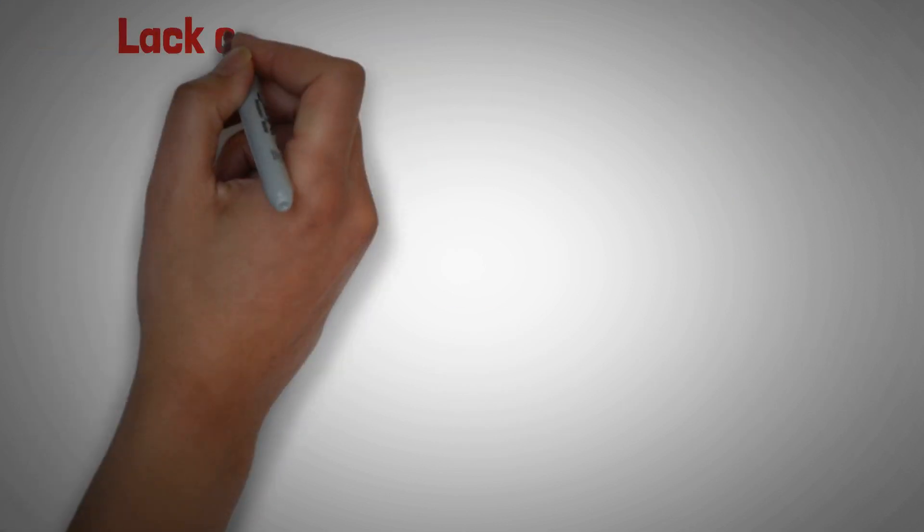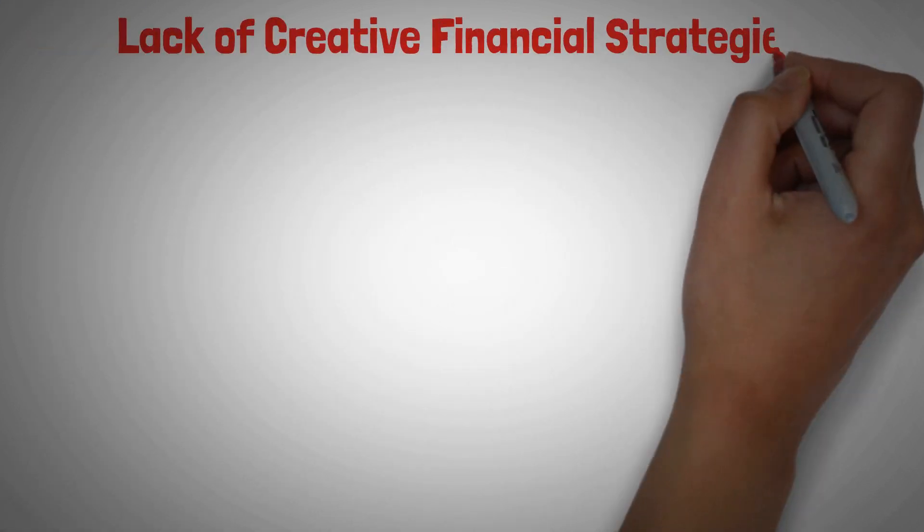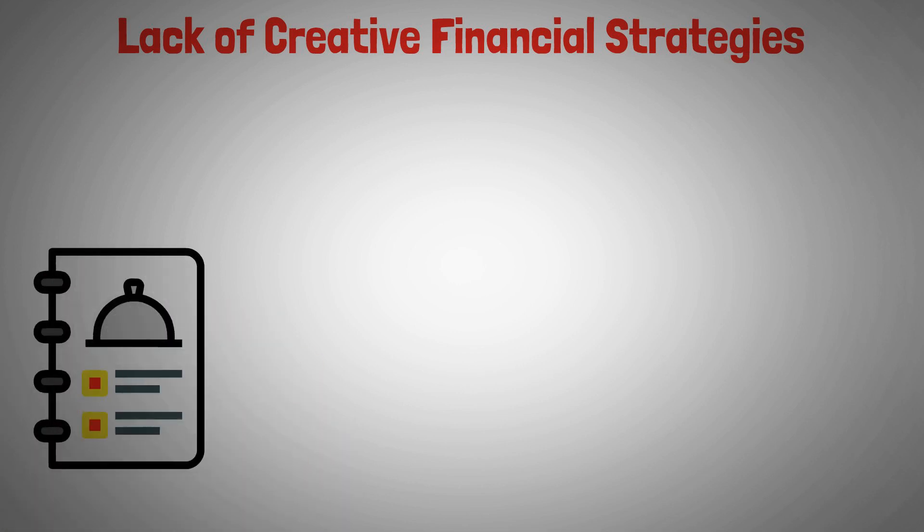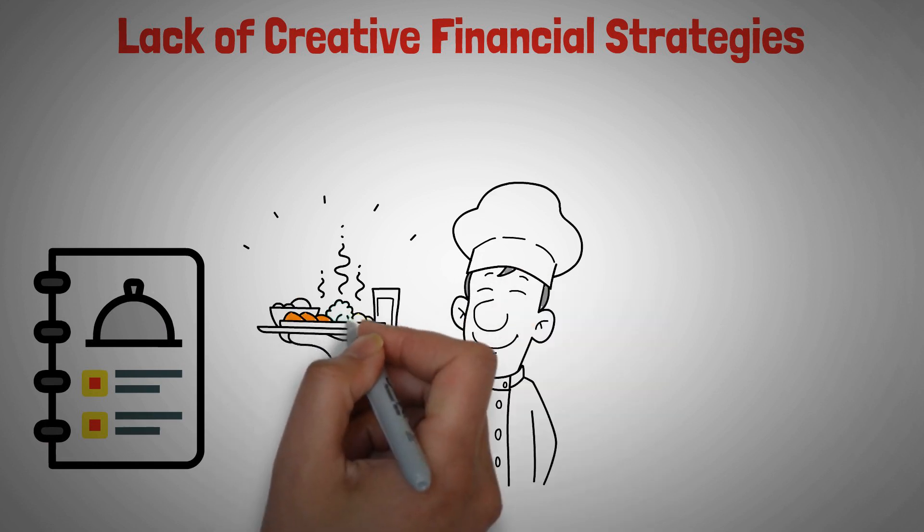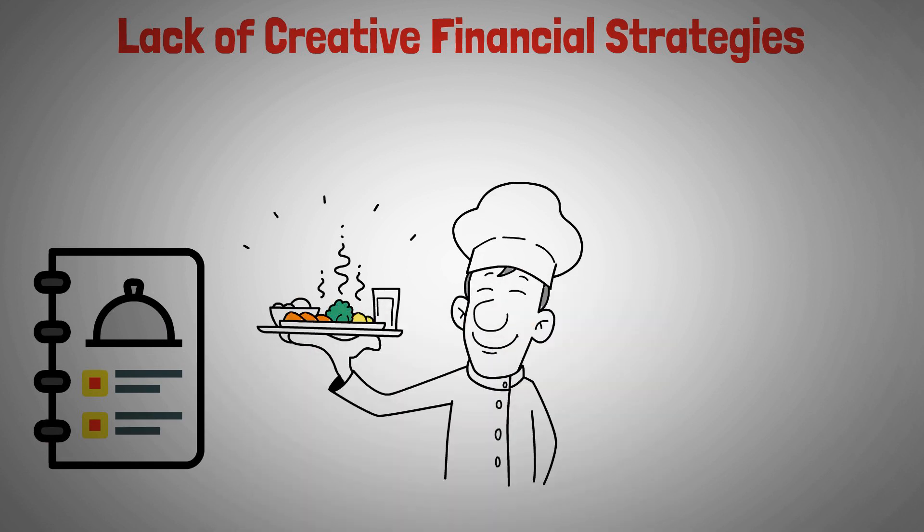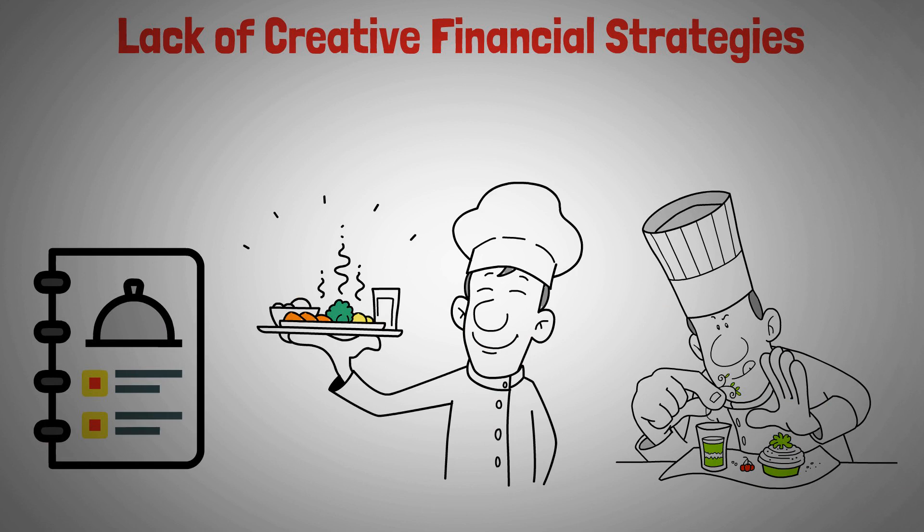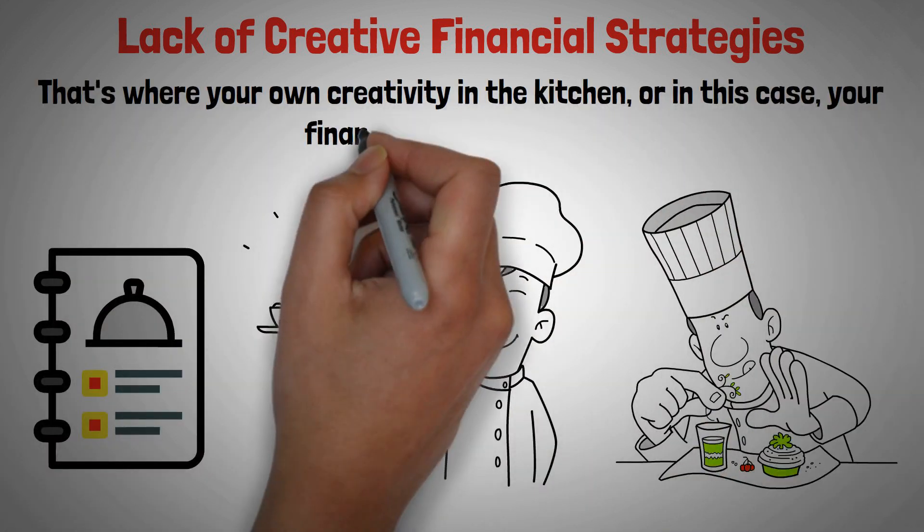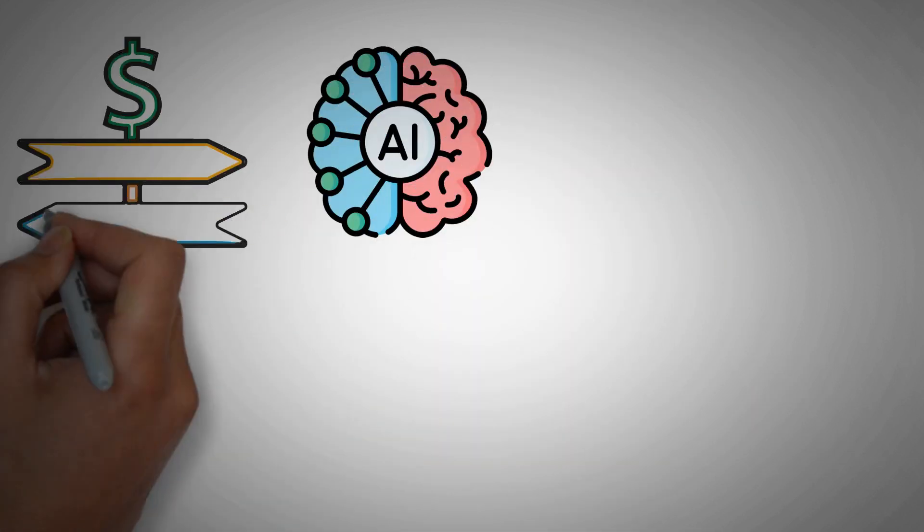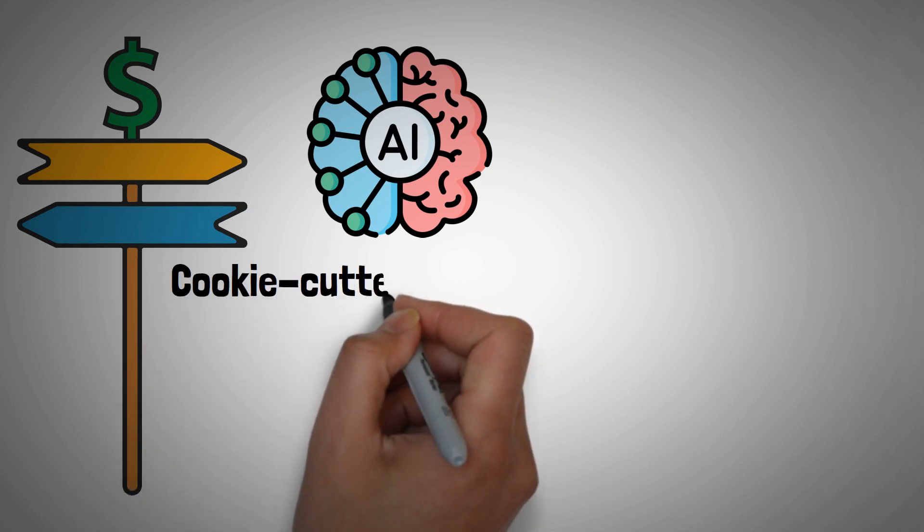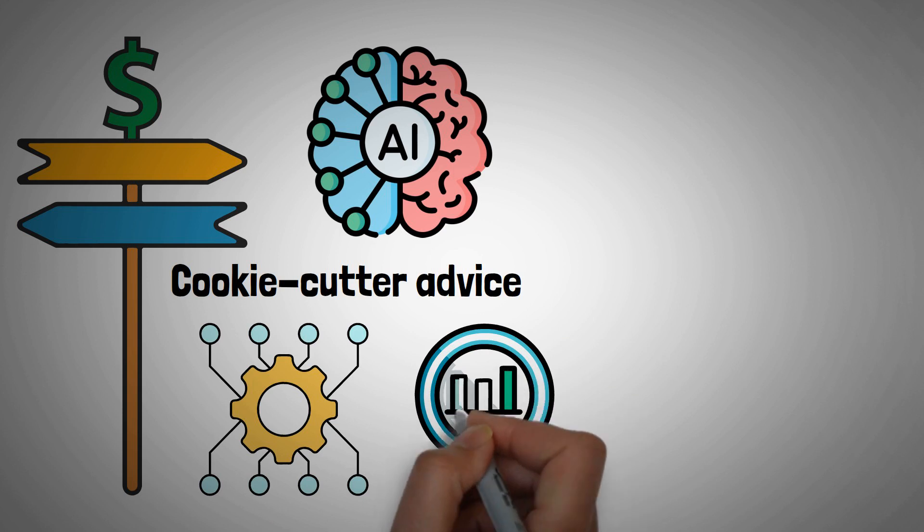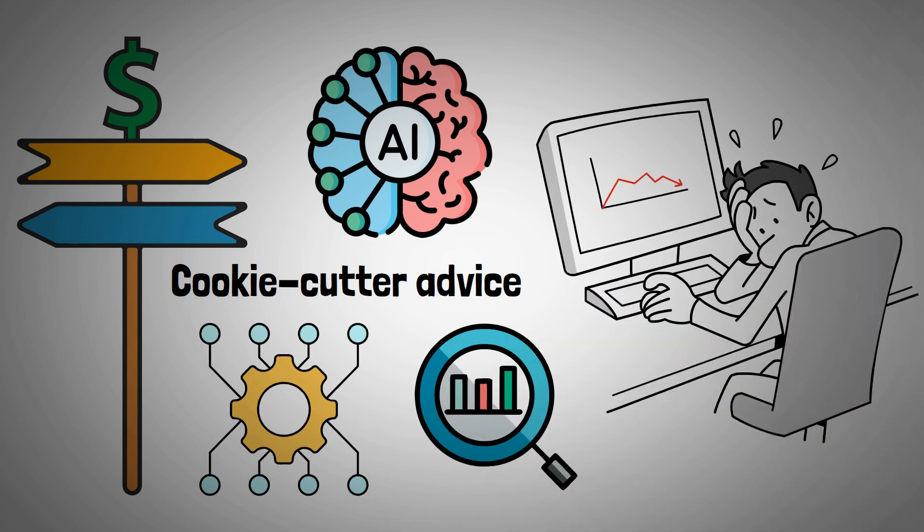Number three, lack of creative financial strategies. Now, AI is like this big recipe book that's got all the standard dishes. It's great when you need something tried and true, but what if you want to whip up something new and exciting? That's where your own creativity in the kitchen, or in this case, your finances, really matters. When you rely on AI for all your financial decisions, you're mostly getting cookie-cutter advice. It's based on algorithms and data from a bunch of people, but it might not fit your unique situation.